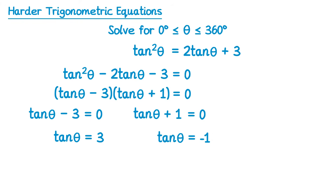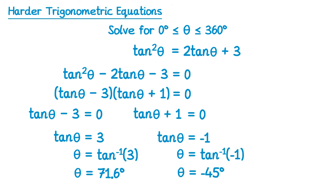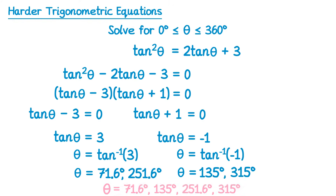Doing inverse tan of 3 gives 71.6 degrees, and inverse tan of negative 1 gives negative 45 degrees, which isn't in our range. For tan graphs we add 180: 71.6 plus 180 gives 251.6 degrees. For the other equation, negative 45 plus 180 gives 135 degrees, which is in range, and adding 180 again gives 315 degrees. Those are all the solutions.